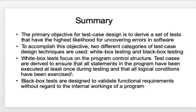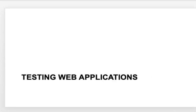In summary so far: the basic objective of writing a test case is to find the maximum number of errors in a program with minimal effort. We have two broad categories of testing — black box and white box. White box testing focuses on the program control structure, whereas black box testing focuses on the functional requirements of the program without being concerned with its internal working.